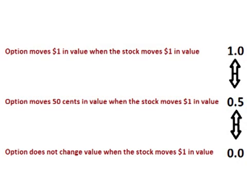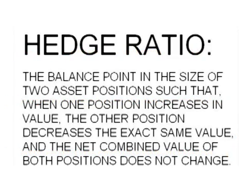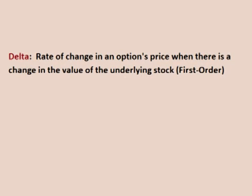A delta of 1 means the value of the call option is moving $1 for $1 with the underlying stock, and a delta of 0 means that the value of the option does not move at all when the underlying stock changes value. Delta is the hedge ratio. A single option contract locks in a buy or sell price for 100 shares of stock. A delta of 0.5 means that 50 shares of stock can be hedged with a single option contract.